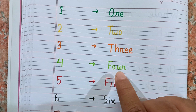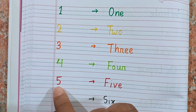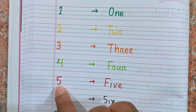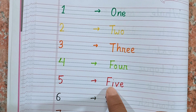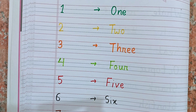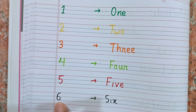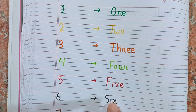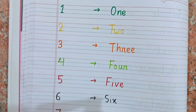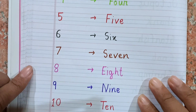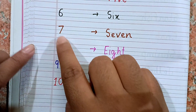After 3 the next number is 4 — the spelling of 4 is F-O-U-R. After 4 the next number is 5 — the spelling of 5 is F-I-V-E. After 5 the next number is 6. Which number is this? This is 6.